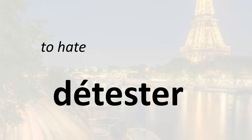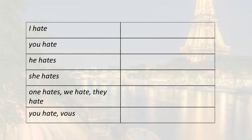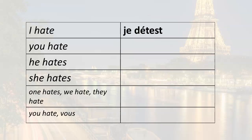Détester is a regular ER verb, which means you'll use the ER verb endings that you're already familiar with to conjugate the verb. So let's go ahead and do the conjugation here.